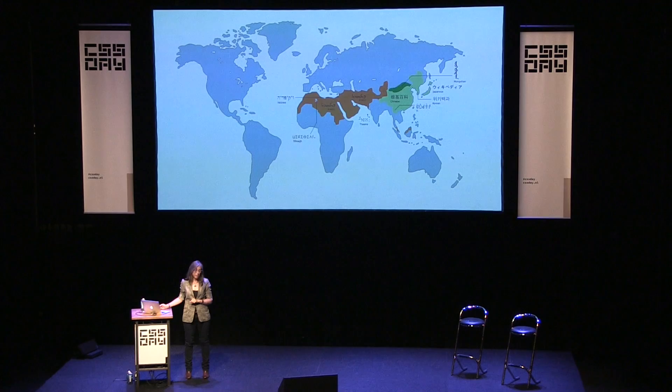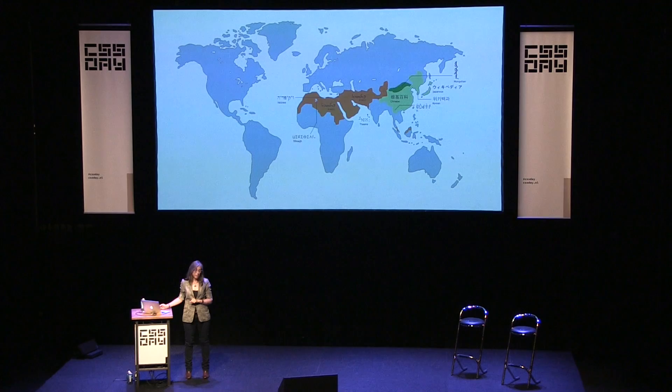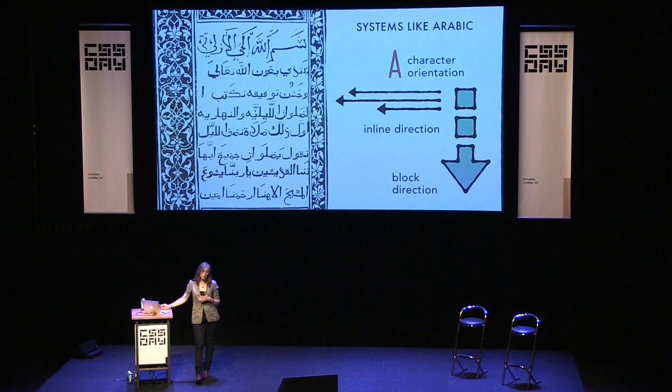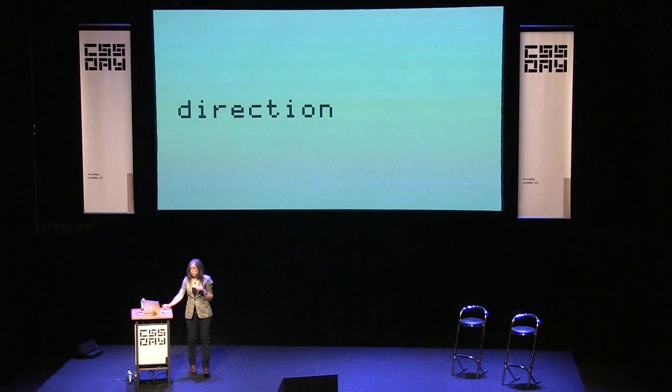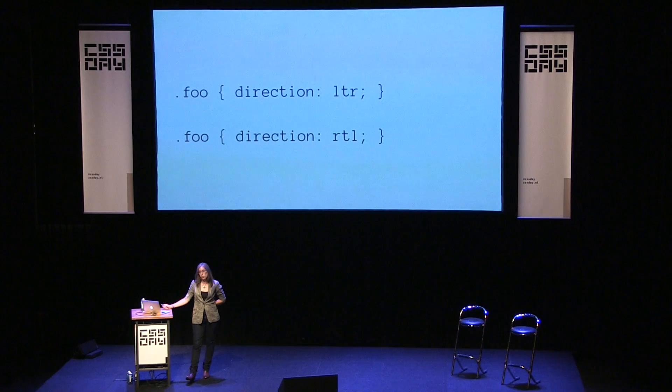Many of you who've done internationalization know that the thing that comes up first is supporting Arabic, Hebrew, and other right-to-left languages. The block direction is still going top to bottom, character orientation is still upright, but the inline direction is right-to-left. This brings us to our first CSS property: the direction property. You write it like 'direction: rtl' or 'direction: ltr.' It's been around forever — at least since CSS2, and it was in IE 5.5. It's so old it's not even on Can I Use.